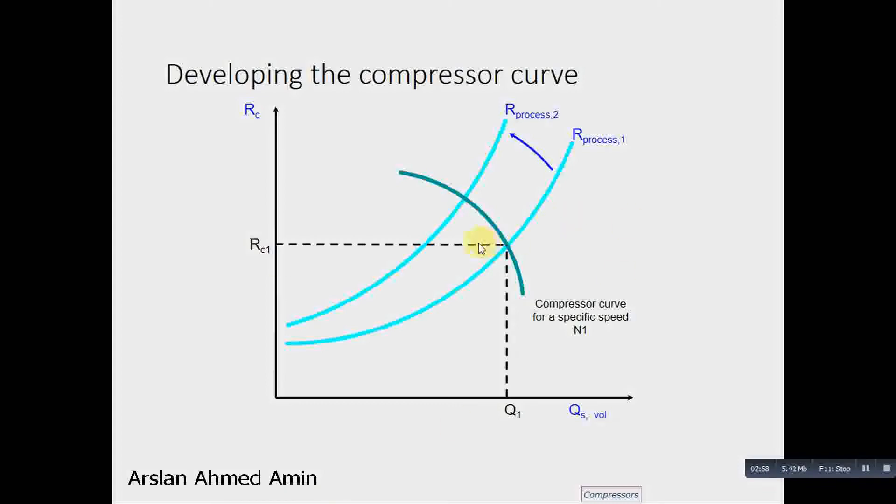So when the flow starts reducing, the resistance felt by the compressor starts increasing. So here we see that Q2 is less than Q1 and compression ratio has increased.